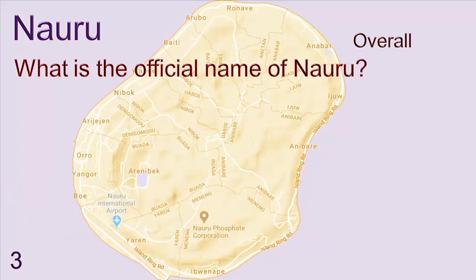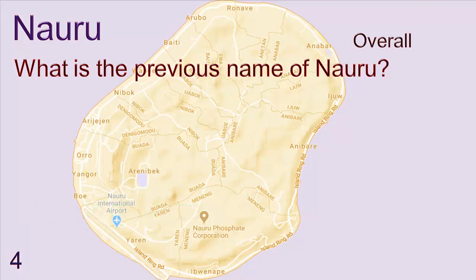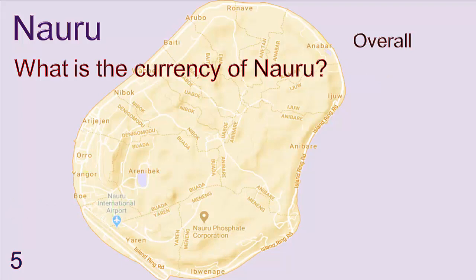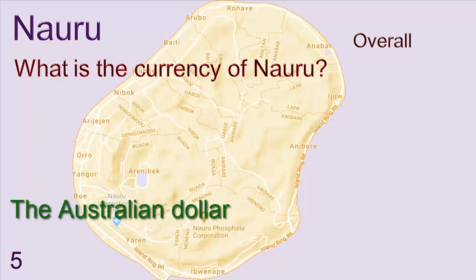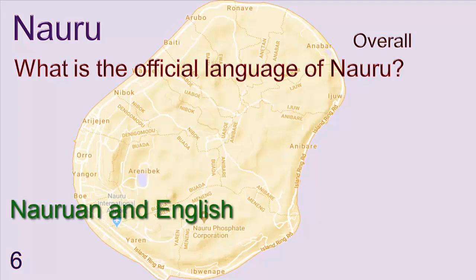What is the official name of Nauru? Republic of Nauru. What is the previous name of Nauru? Pleasant Island. What is the currency of Nauru? The Australian dollar. What is the official language of Nauru? Nauruan and English.